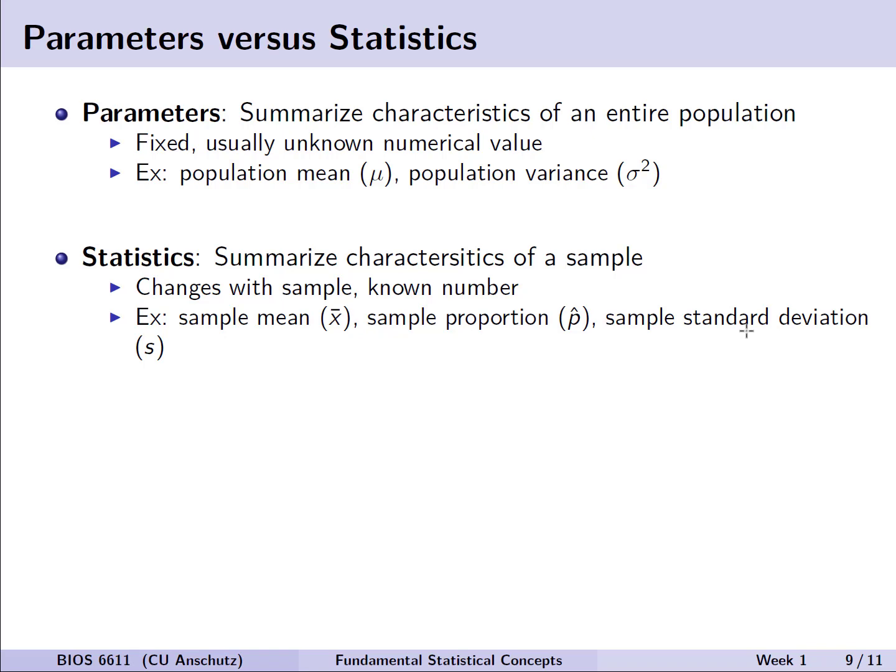Another important distinction is that of parameters versus statistics. Parameters summarize characteristics of that population of interest. Now, these are fixed and usually unknown values because again, we rarely actually have access to or the ability to sample the entire population. Now, examples of this might be things like the population mean μ and the population variance σ², some more common types of parameters we like to describe or estimate through inference.